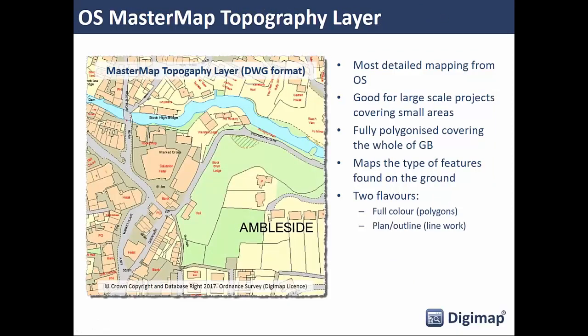The first dataset is OS MasterMap Topography Layer — the most detailed mapping available for Great Britain, provided by Ordnance Survey. It's a fully polygonized dataset covering the whole of Britain in adjacent and touching polygons. Ordnance Survey records what features are on the ground — for example, they record that something is a building but not whether it's residential, industrial, or commercial. We make this data available in two versions: a full color version, and a plan style which concentrates on line work with buildings shown as lines rather than polygons.